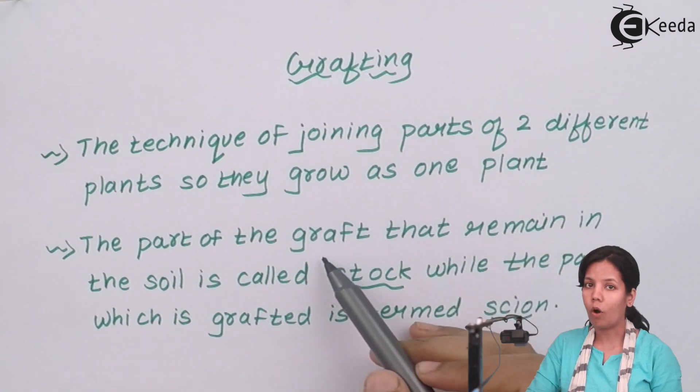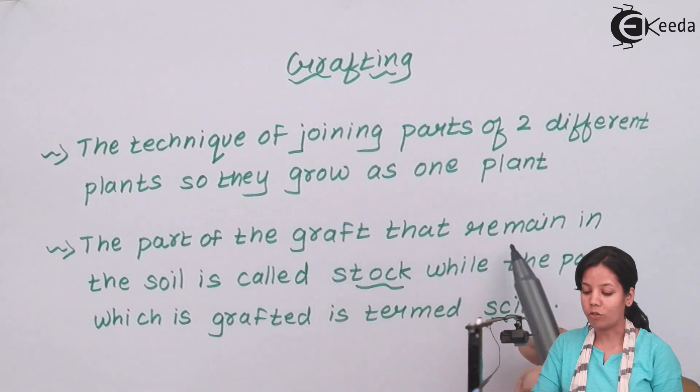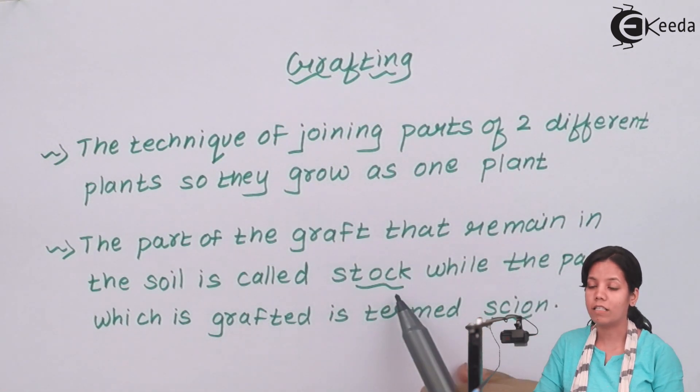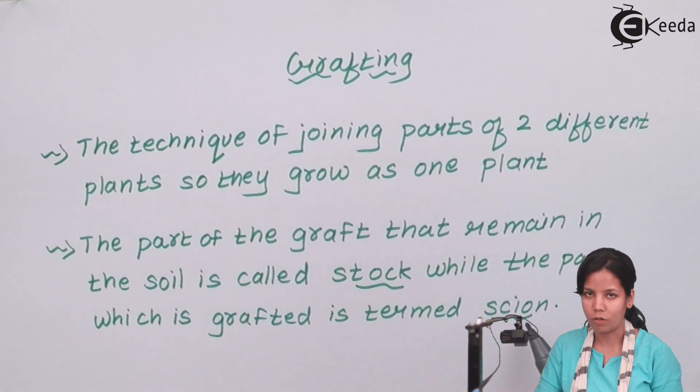The part of the graft, or the part of the stem if you are grafting a rose plant, that remains in the soil is called stock, while that part which is grafted is termed as scion.